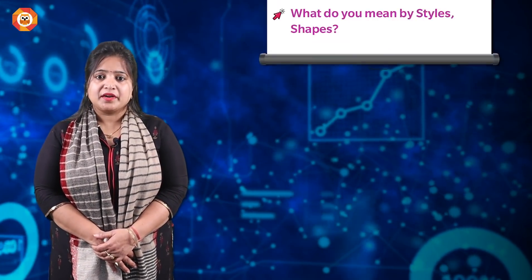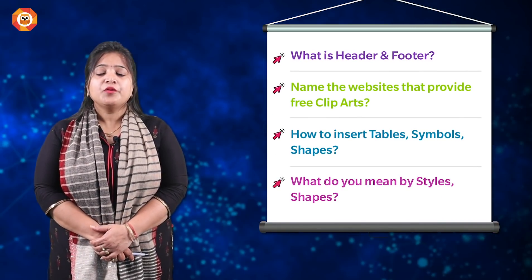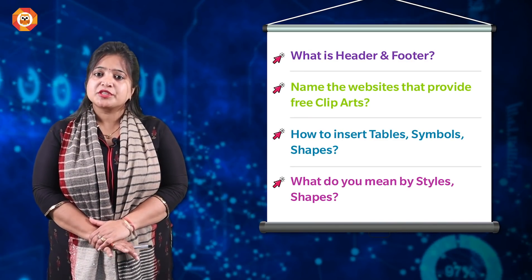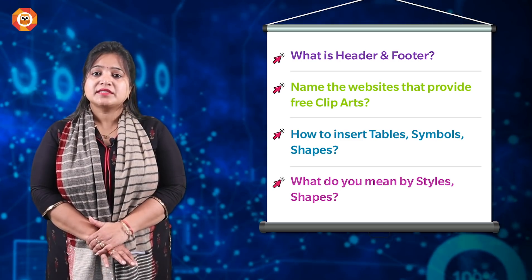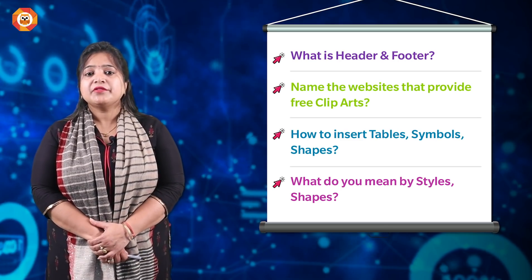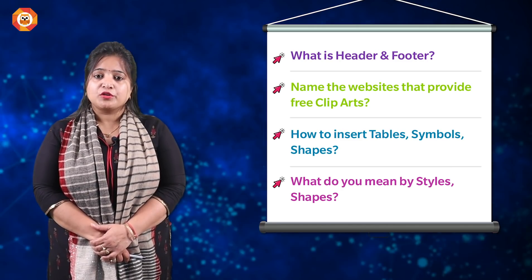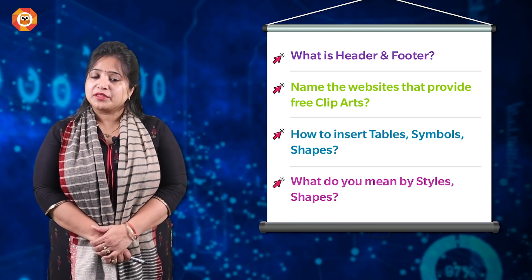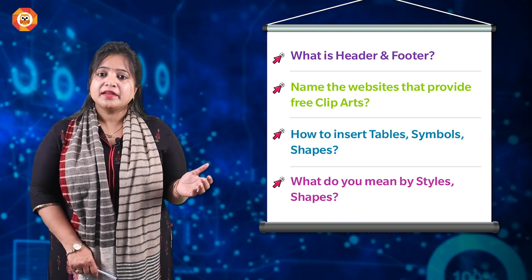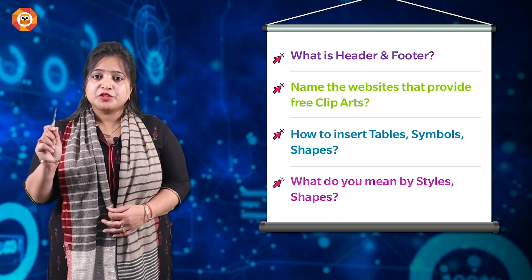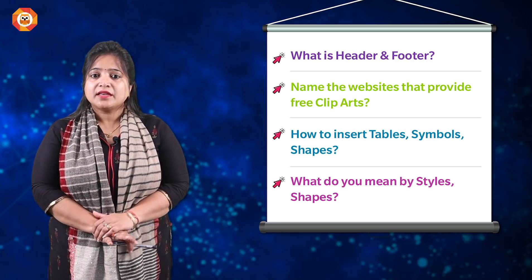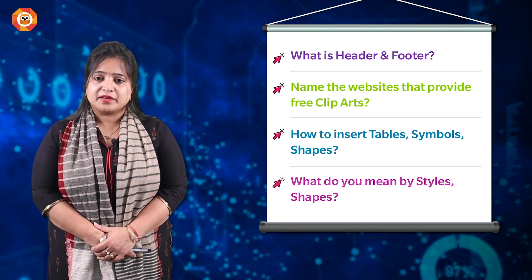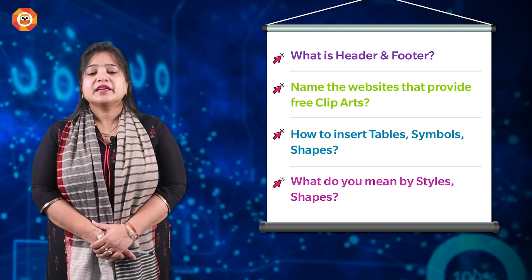The next chapter is chapter three, Word. You should know what steps are required to execute various tasks. For example, header and footer is a very important topic. You should know the steps involved: click the Insert tab, then click on Header and Footer, then choose the Header option. This way you clarify in three or four steps, and these types of questions come for three marks.